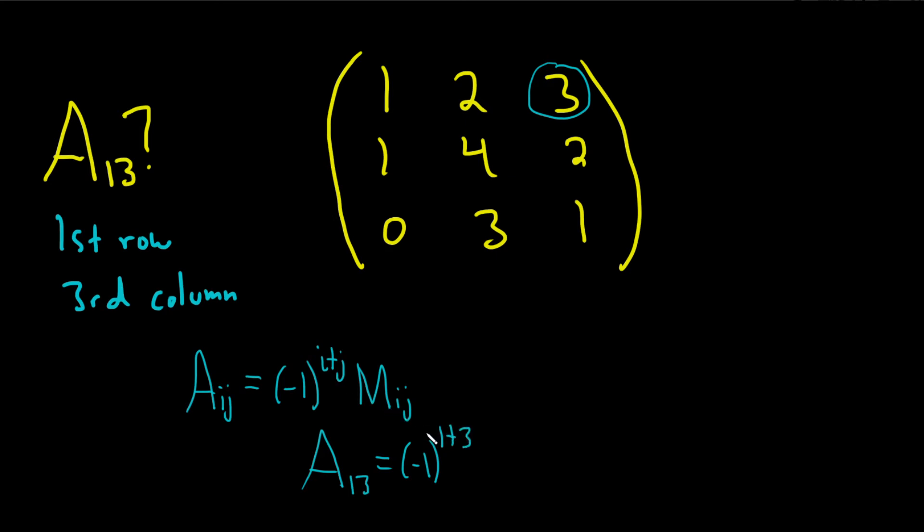And then it's m sub ij, so that would be m 1, 3. What is that? That's just the determinant you get when you cross out the row and column.